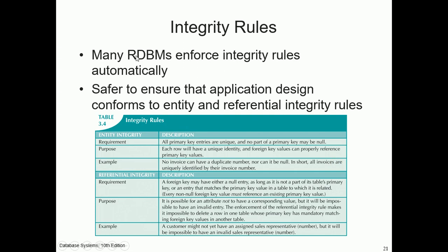Integrity rules: many relational database management systems enforce integrity rules automatically. It is safer to ensure that application design conforms to entity and referential integrity rules. For entity integrity, the requirement is that all primary key entries are unique and no part of a primary key may be null. The purpose is that each row will have a unique identity and foreign key values can properly reference primary key values. For example, no invoice can have a duplicate number nor can it be null — all invoices are uniquely identified by their invoice number.